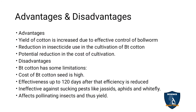Advantages of BT cotton: The yield of cotton is increased due to effective control of boll worms. There is a reduction in insecticide used in the cultivation of BT cotton, reducing the use of chemical insecticides. This reduces the cost of farming in agriculture for the farmers, giving a potential reduction in the cost of cultivation.